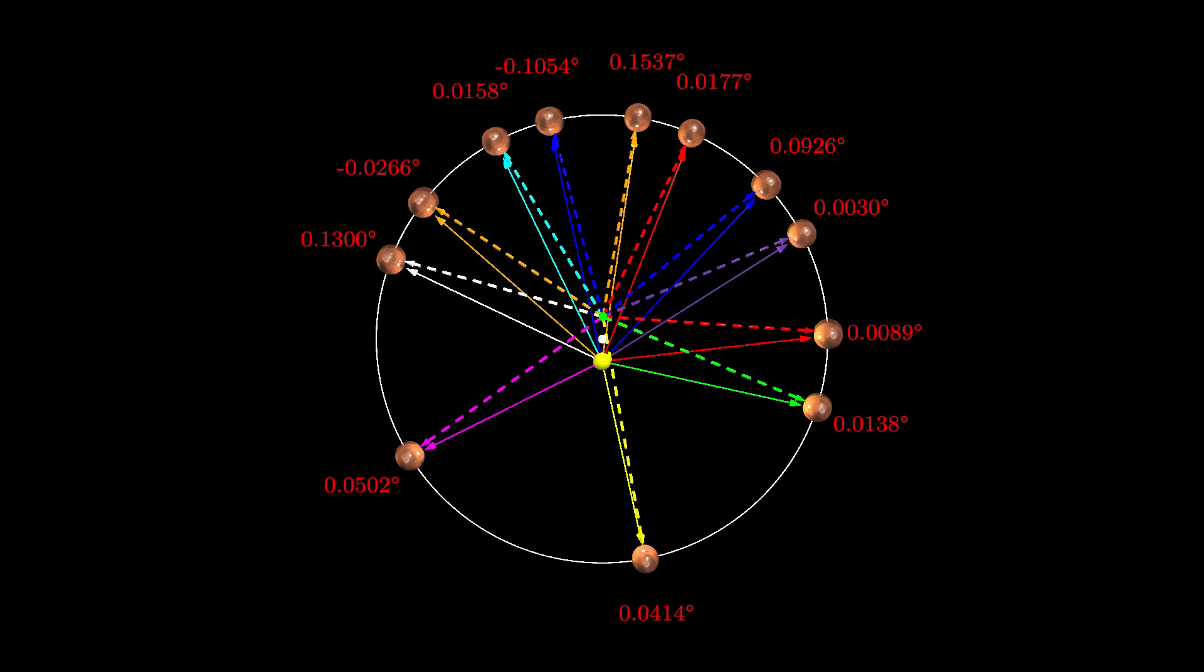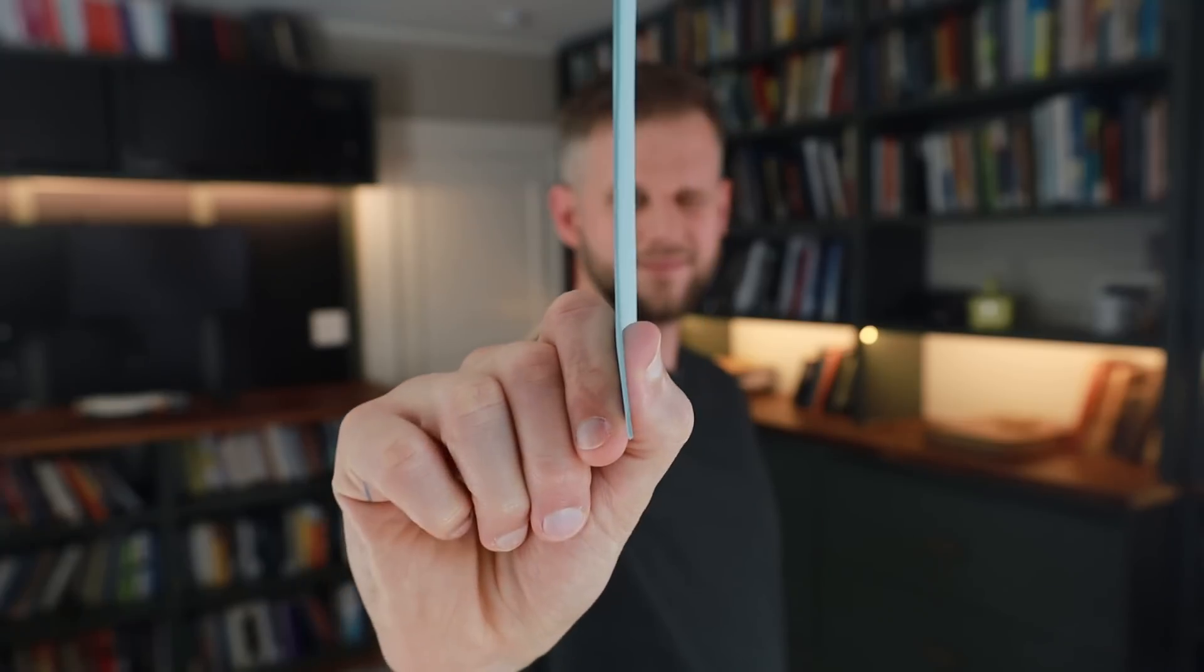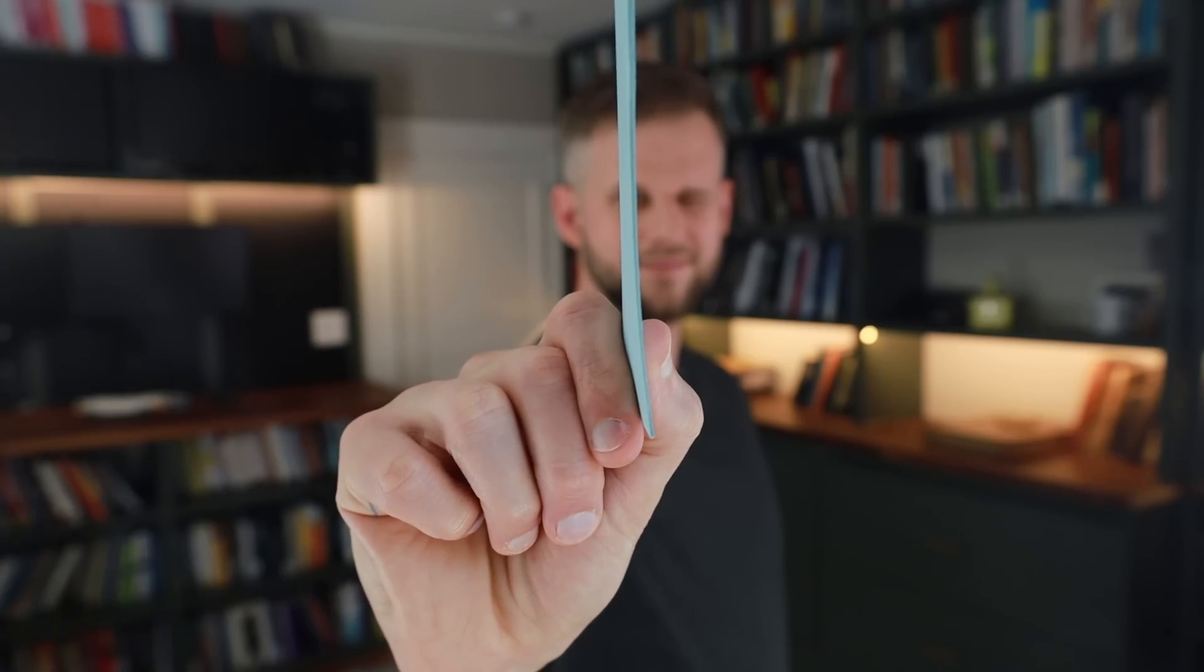His astounding two minutes of arc error now jumped to eight minutes. Eight minutes of arc, or 0.13 degrees, is still an incredibly small error. It's about the thickness of four index cards held at arm's length. But Kepler knew that Tycho's observations had an accuracy of around two arc minutes and refused to accept this model.